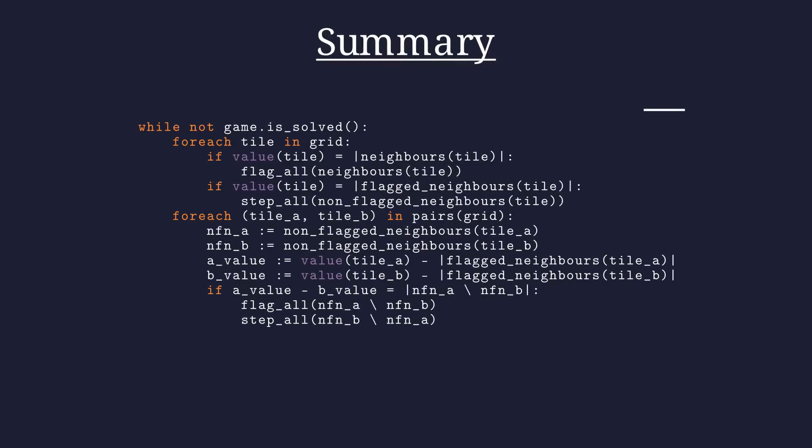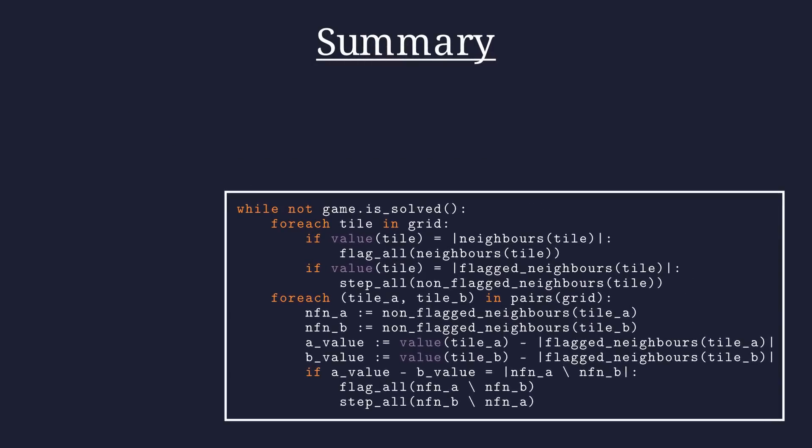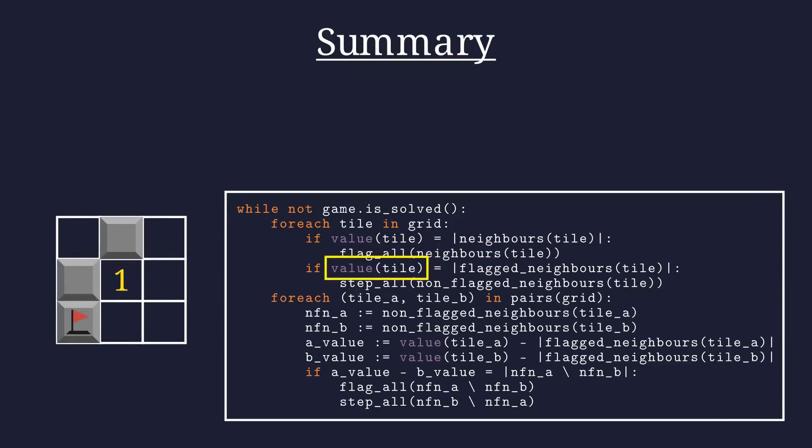Here's an algorithmic representation of what we've done, which means while the board hasn't been solved, we first consider tiles which might give us some information from our primitive approach. There are approaches of how to decide which to consider, which would be useful to know when getting a computer to adopt this approach, but for now we can just eyeball it. For each of those tiles, if its value equals its neighbor count, consider those neighbors mines by flagging all of them. If its value equals its flagged neighbor count, consider all other neighbors safe by stepping all of them. We repeat this for all mines that the strategy might work on.